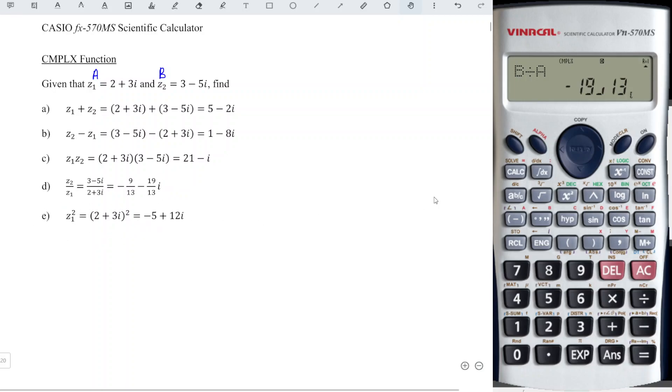Next, the last one, the last example of this tutorial. So we have z1 squared, which means a squared. So we have a and square, equals -5. Shift equals, plus 12i, and we're done. Okay, that's all for this video. Thanks for watching. Hope you liked this. See you.